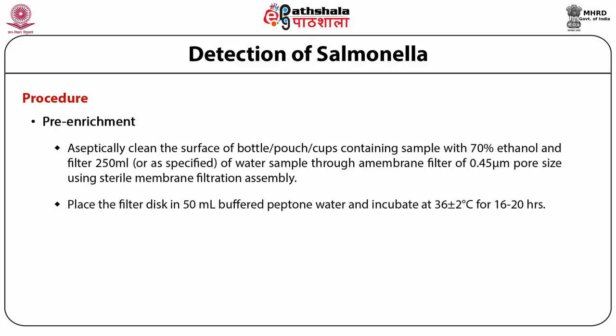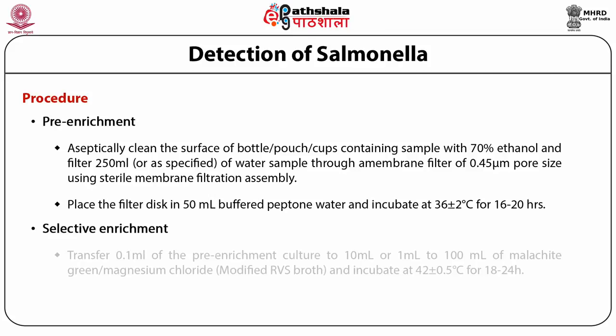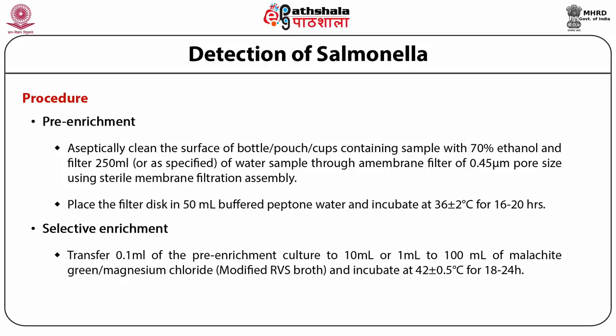Place the filter disk in 50 ml buffered peptone water and incubate at 36 ± 2°C for 16 to 20 hours. For selective enrichment, transfer 0.1 ml of the pre-enrichment culture to 10 ml, or 1 ml to 100 ml, of modified RVS broth and incubate at 42 ± 2°C for 18 to 24 hours.